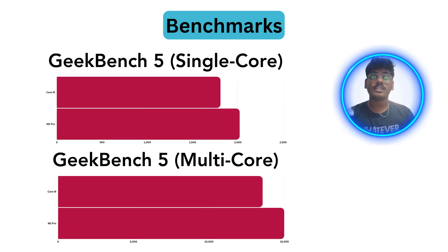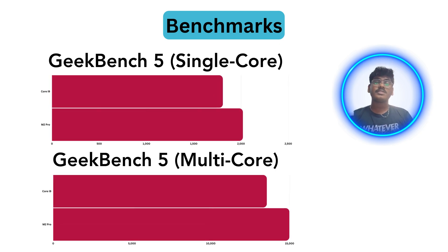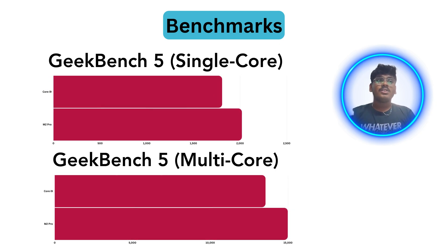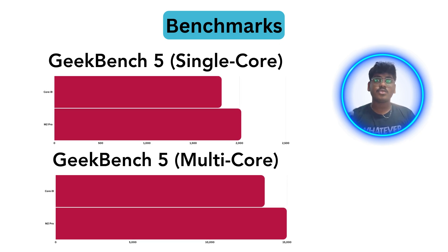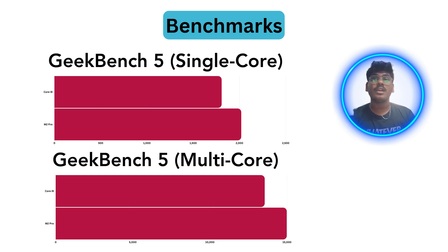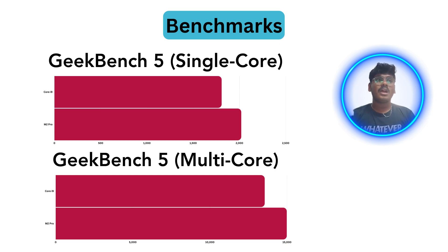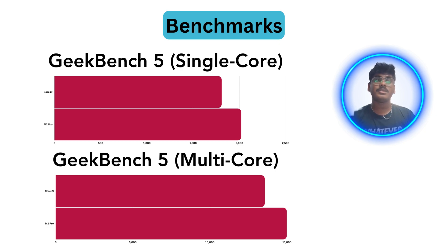Next, the Geekbench 5 benchmarks. In single-core, Intel i9 scores 1807 and M2 Pro scores 2019 — about 12% better performance for M2 Pro. In multi-core, i9 scores 13,552 and M2 Pro scores 14,982 — around 11% performance improvement for M2 Pro compared to i9.